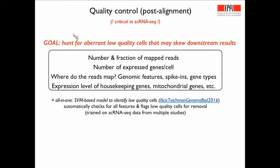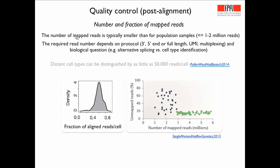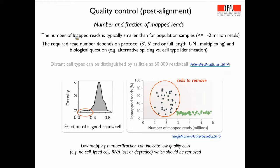Similarly, if you spike in a known amount of mRNA and see that most reads map to your spike-ins, your endogenous mRNAs were likely absent or very low quality — a disproportional amount of reads mapping to spike-ins is a reason to eliminate that cell. You can also use expression levels of housekeeping genes — if suspiciously low, you want to eliminate the cell. The Titan group developed a vector machine-based approach to automatically check for all these features and flag low-quality cells. This approach was trained on a lot of single-cell RNA-seq data from multiple studies.